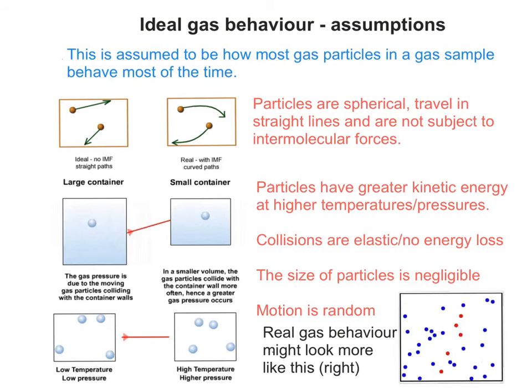Real gas behaviour might look more like the animation in the bottom right. You can see there's changes in the speed of the particles. They do have random motion, but there isn't necessarily elastic collisions. There's definite loss of energy when some particles collide with each other in certain orientations. This makes it difficult to calculate precisely what the gas is going to do, so we tend to assume this isn't what happens.